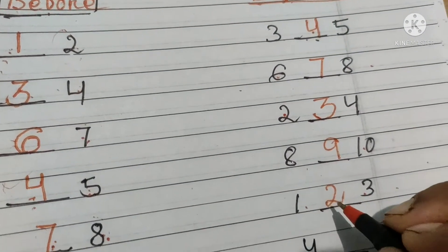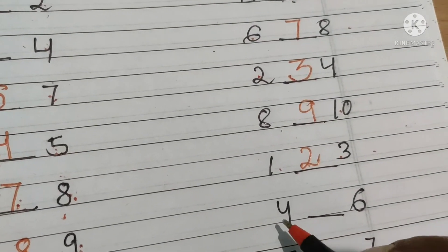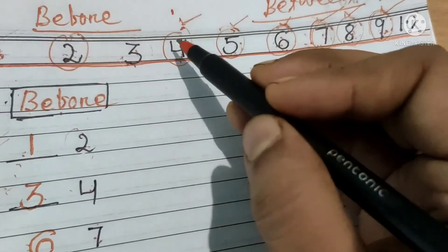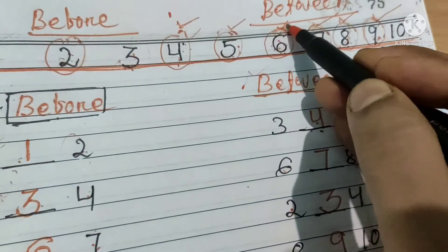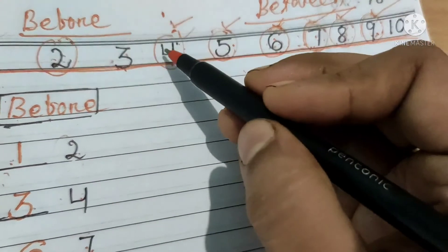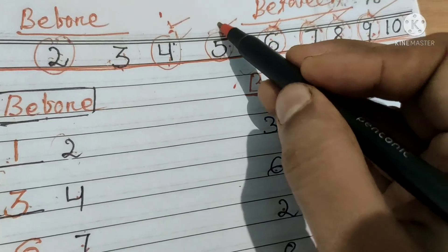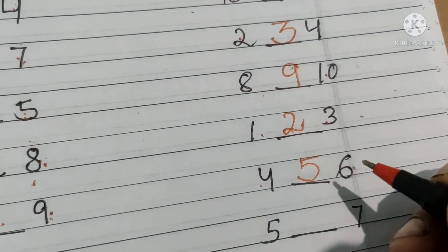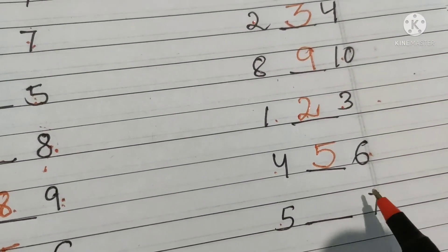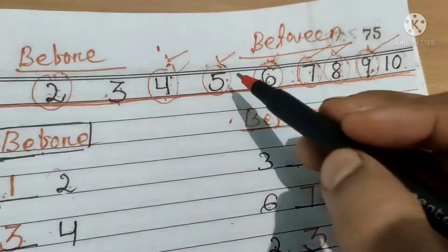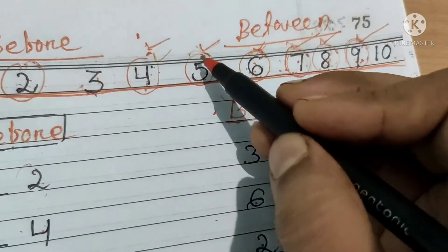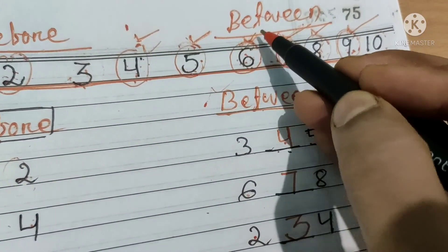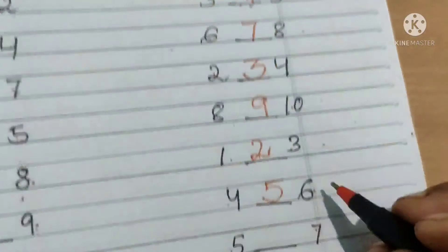One and three ke beech mein number two aata hai. Now comes four and six. Chalou number line dekhte hain. What comes between number four and six? Number five. Number four and six ke beech mein number five aata hai. So we will write here number five. Then comes five and seven. Chalou number line dekhte hain. What comes between number five and seven? Number six. We will write number six.